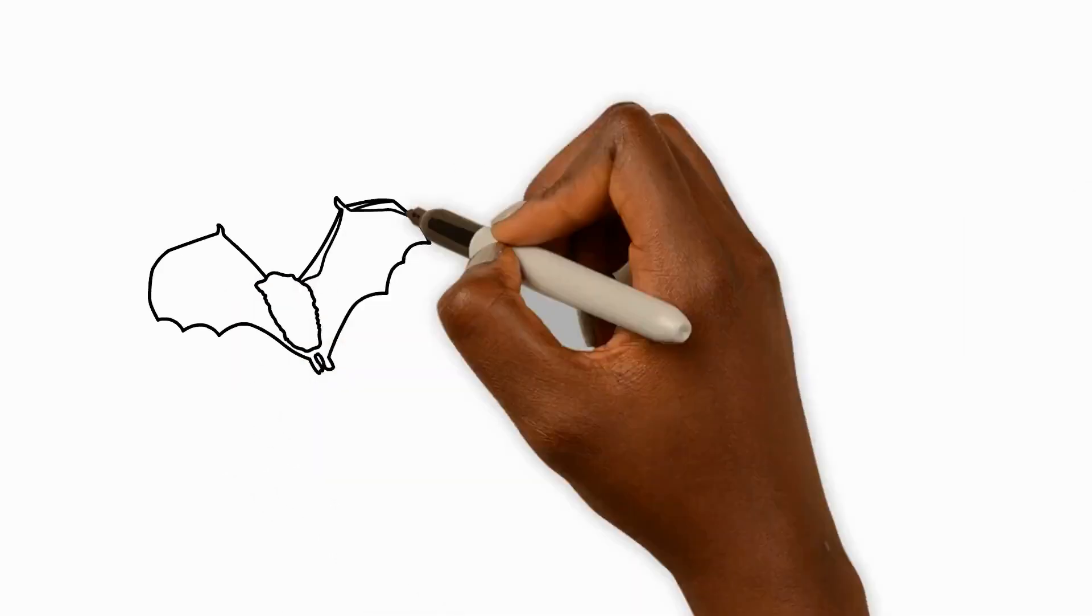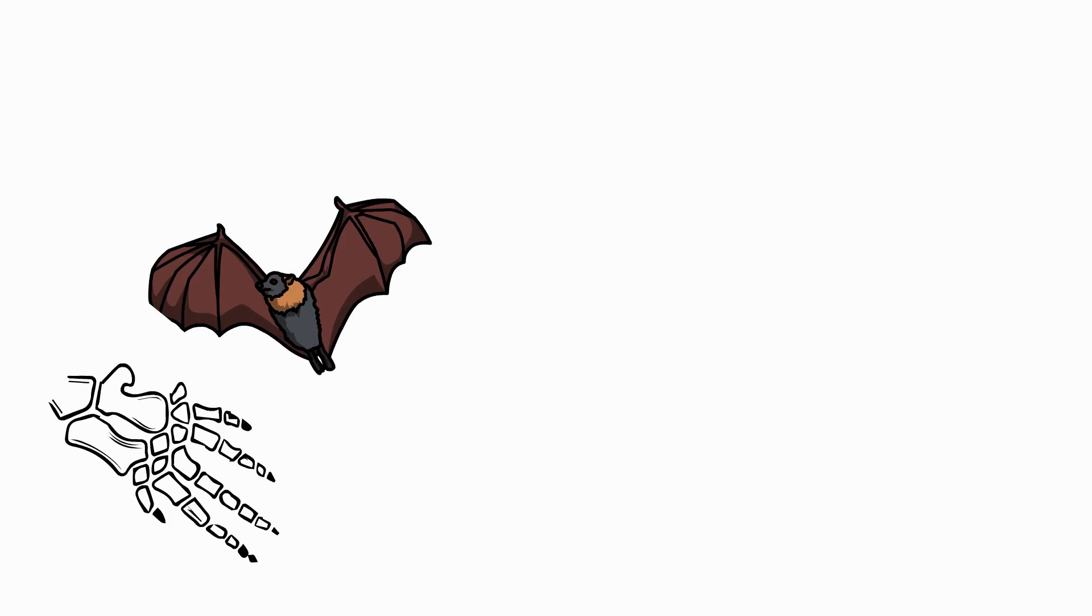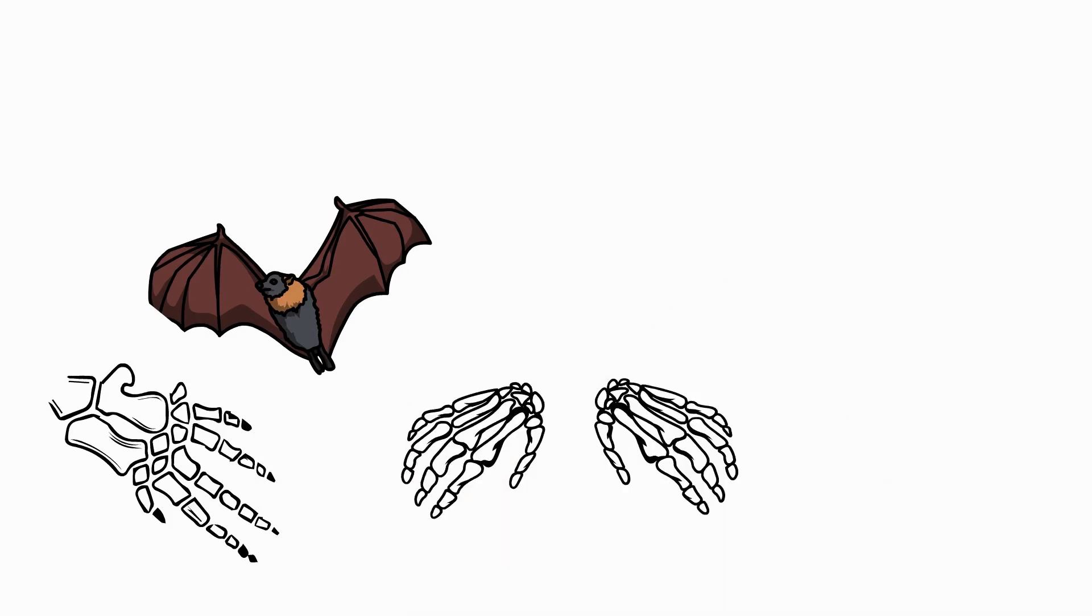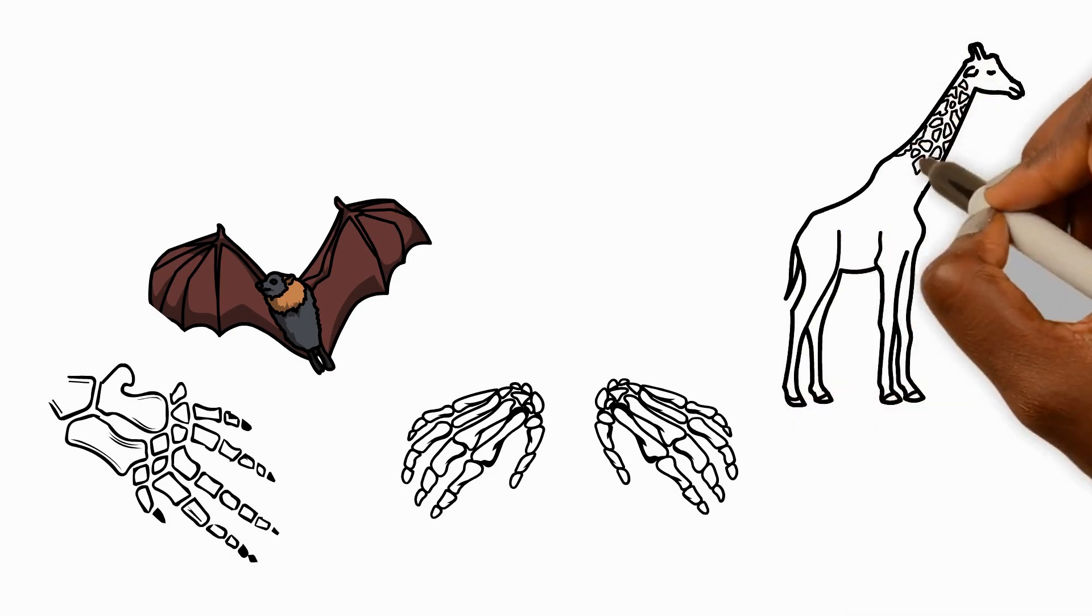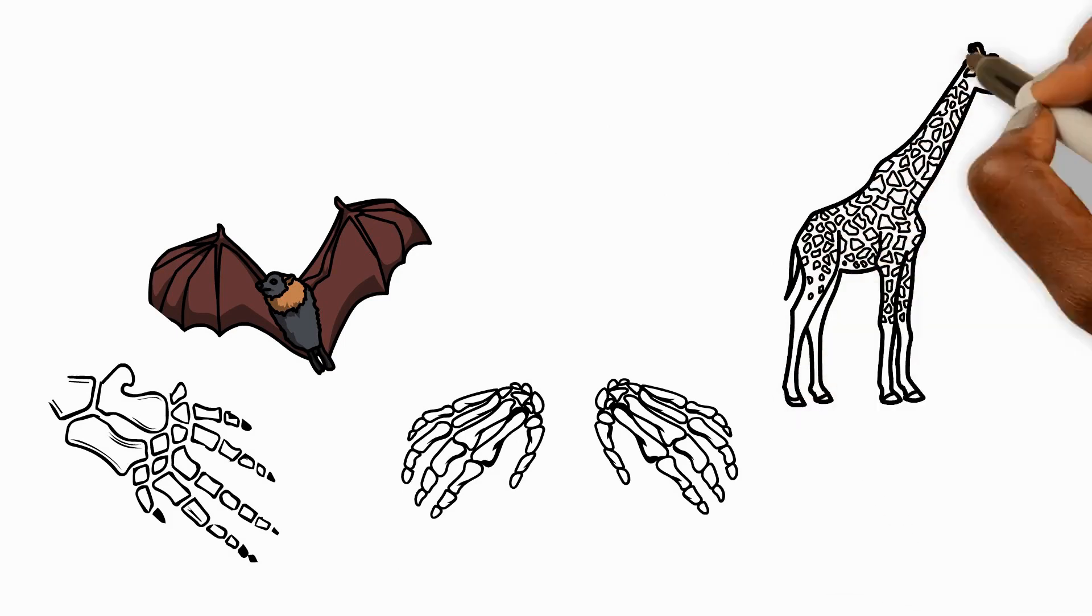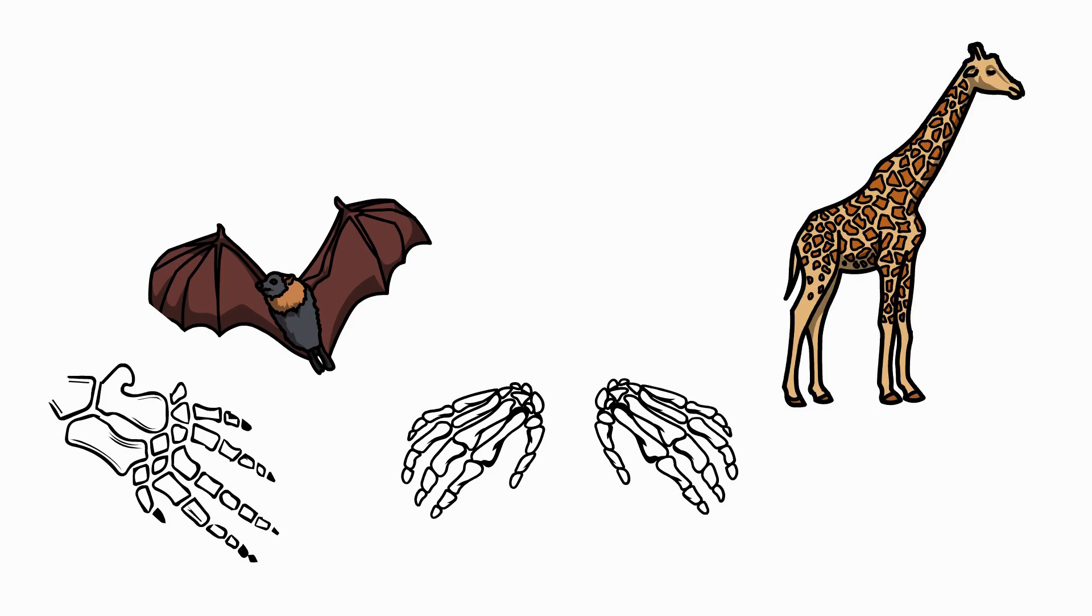You might not have noticed, but animal bones like bat wings, whale fins, and our own hands are actually quite similar, although the thickness, size, and weight are different. And did you know giraffes and humans have the same number of neck bones, though the giraffe's are much longer? Isn't that fascinating?